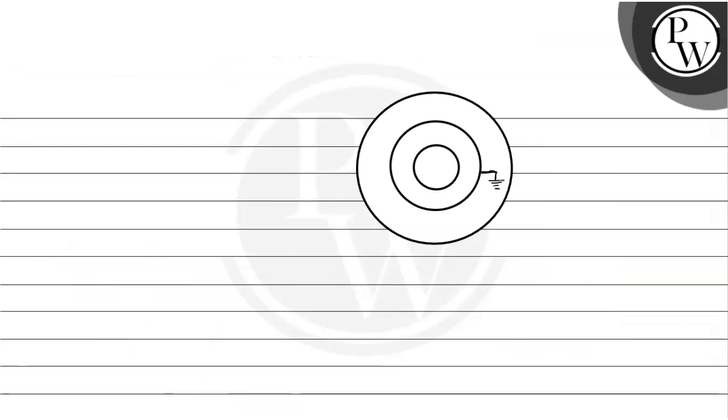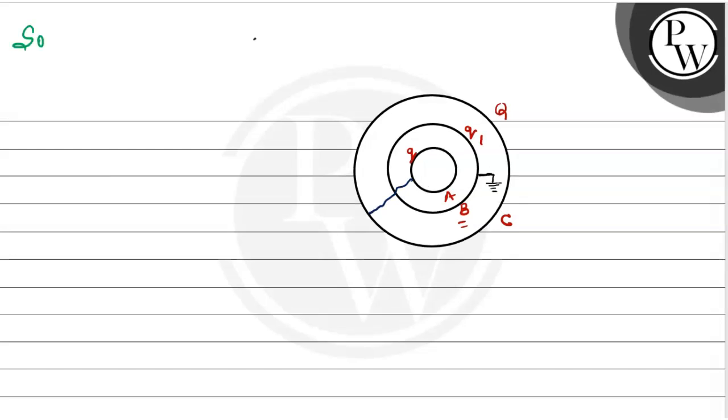So students, here are three shells given. Here are three shells A, B and C. Question given is that B is earthed. So we have shown this diagram. We have shown here three shells, Q given here. Here we are shown the current diagram.